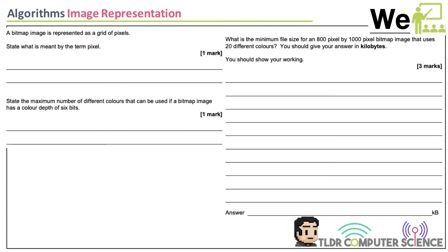State what is meant by the term pixel. A single dot of color. You can also say it is short for picture element — that's what the abbreviation means. Either answer — picture element or single dot of color — will get the mark.